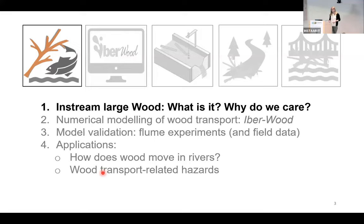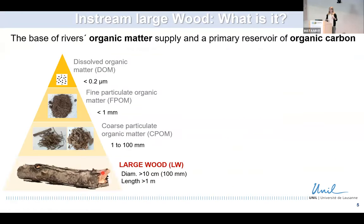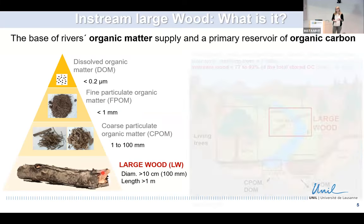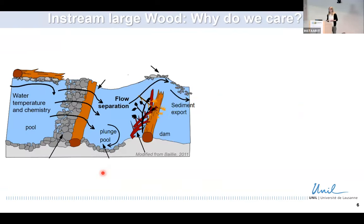In-stream large wood refers to downed trees, trunks, root wads, and branches that fall in a river. They are the base of the river's organic matter supply, and in some rivers, together with living trees, they are a major reservoir of organic carbon. But when a tree falls in a river, it triggers a lot of processes.